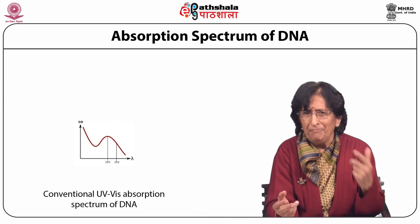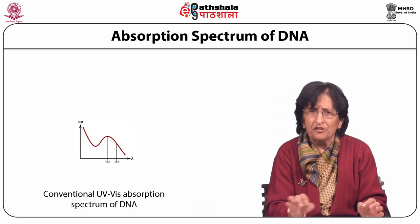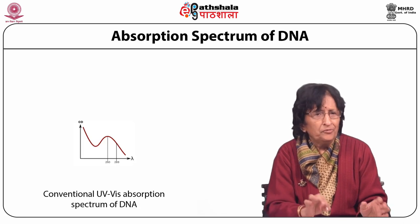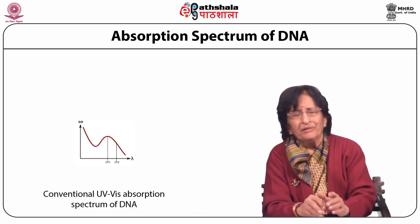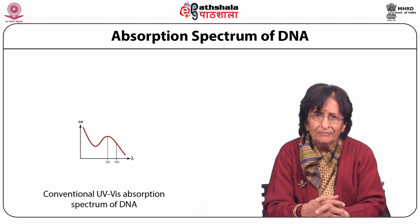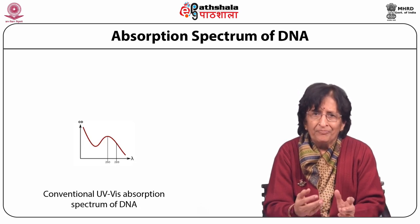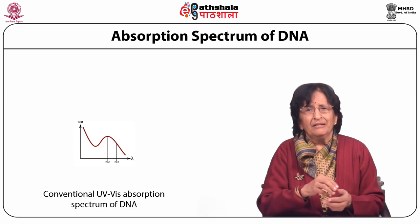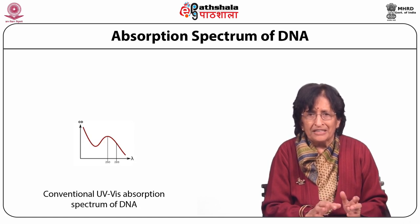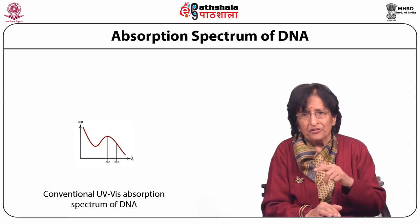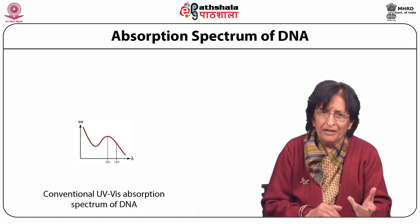We show here a typical absorption spectrum of DNA. Nucleic acids have very strong absorption in the region 240 to 270 nanometers. The conventional UV absorption spectrum is seen in the figure. This spectrum arises from transitions in the aromatic bases — adenine, thymine, guanine, cytosine, and uracil — and depending on the base composition and the environment, these peaks can shift from 255 to 265 nanometers.